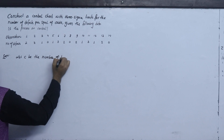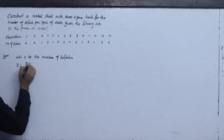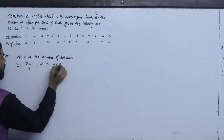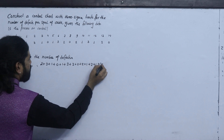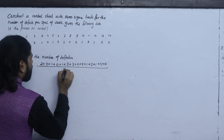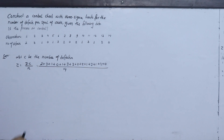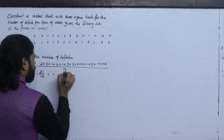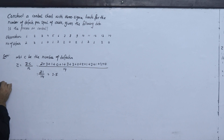The number of defectives: the average is the summation of c, which is the number of defectives. The data values are: 2, 3, 1, 0, 1, 3, 2, 0, 2, 1, 3, 1, 2, 0. The total is 21, and there are 14 observations, so the average c-bar is 21 divided by 14, which equals 1.5.